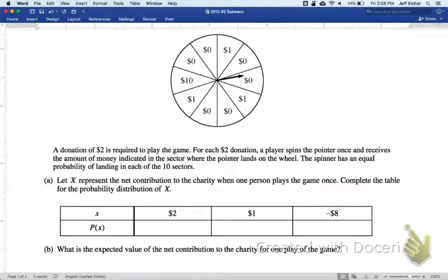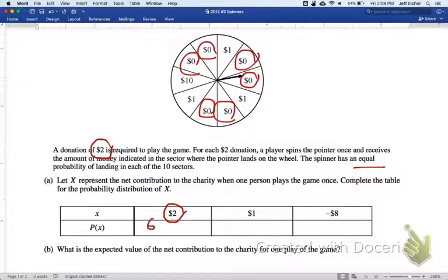So we have X is the amount that the net contribution to the charity that a person makes when they play the game once. So if it costs $2 to play and the charity is making $2 on you, that means you lost. That means you hit one of these zeros here. So since these are equal regions, equal probability, that's 1, 2, 3, 4, 5, 6. So we got 6 out of 10.